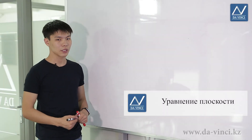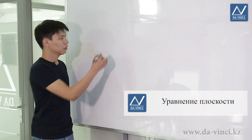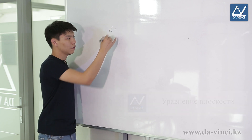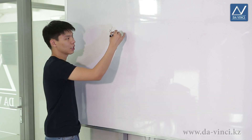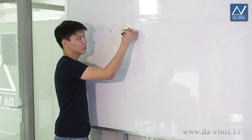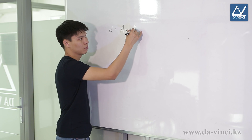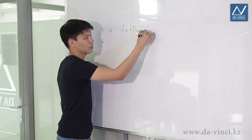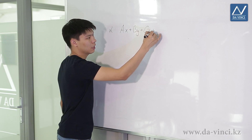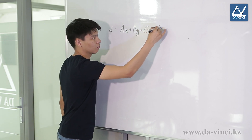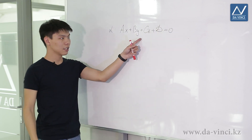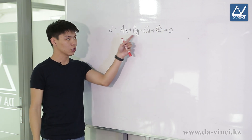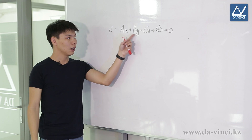Hi, in this lesson we will consider the equation of the plane. In a Cartesian coordinate system, the equation of the alpha plane is given by the ratio AX plus BY plus CZ plus D is equal to 0. XYZ are the coordinates of the point which lie in this plane.